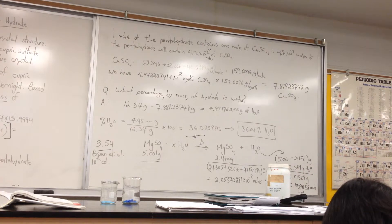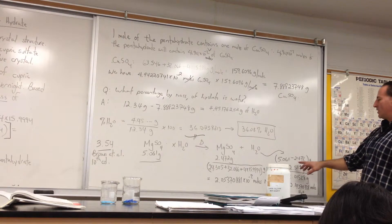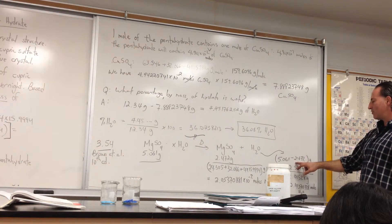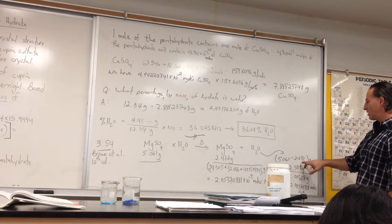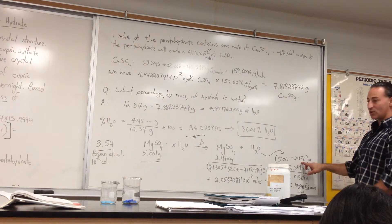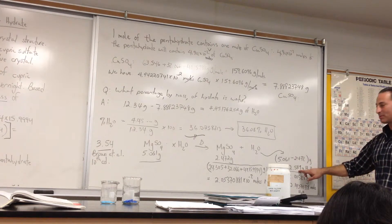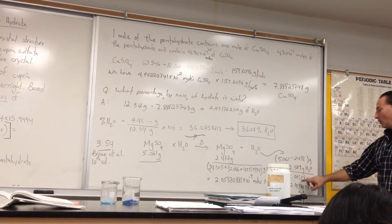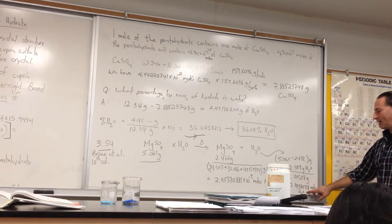We have 2.05 times 10 to the minus 2 moles of magnesium sulfate. The next thing is to find out how many moles of water has been driven off. So the crystal originally weighed 5.061 grams. After it was dried, it weighed 2.47, which means the difference in weight was caused by the evaporation of water, which means that 2.589 grams of the crystal was actually water. We divide by the molar mass of water, and it tells you how many moles of water we have.